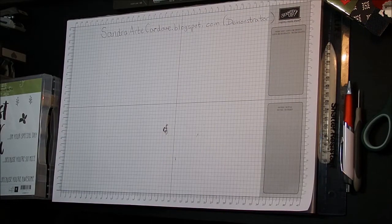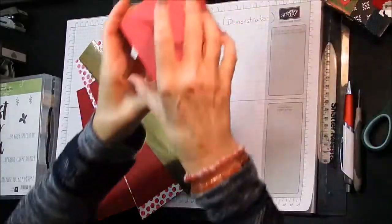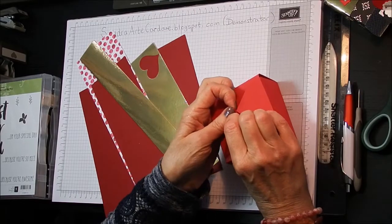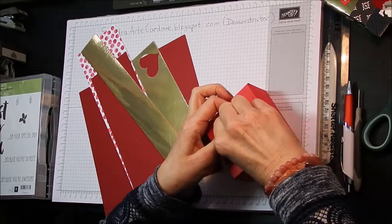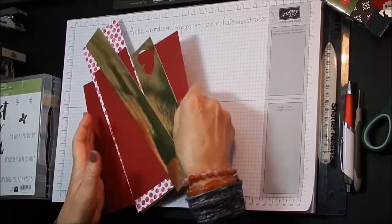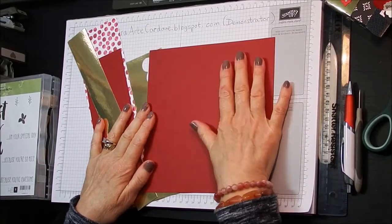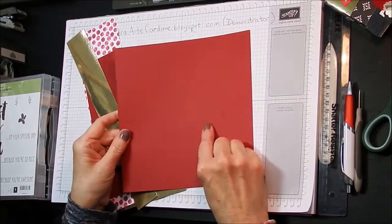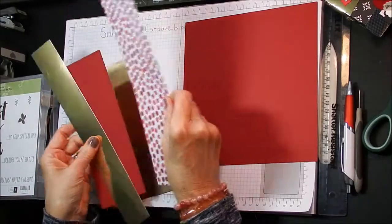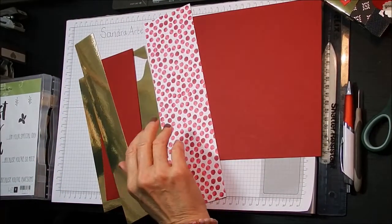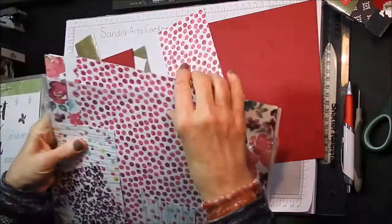Now I have used basic black for one of my boxes. So I did one in basic black and I did one in real red. And now this one I'm doing in rose red because I think it's a pretty colour. And I've cut this designer series paper. This designer series paper that I'm using for my belly band today is called the Painted Blooms designer series paper.